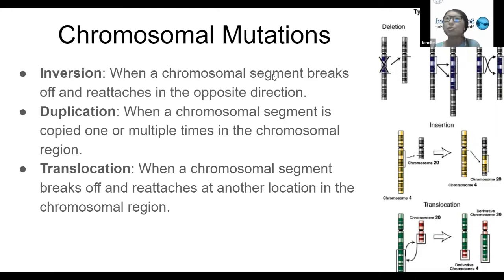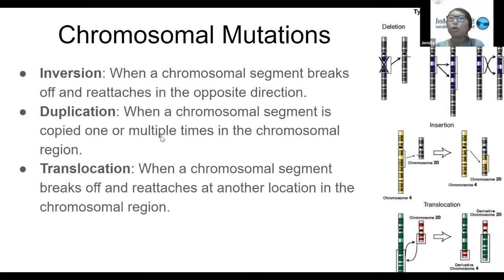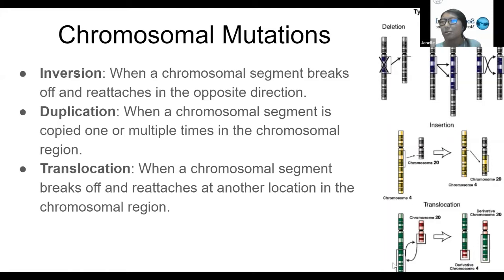There are also inversions, when a chromosomal segment breaks off and reattaches in the opposite direction — you can see in the diagram that one piece inverts so those two pieces are in the original area. Duplication is when a chromosomal segment is copied one or multiple times; in the diagram it was copied twice. Translocation is when a chromosomal segment breaks off and reattaches at another location — here the bottom portion of the green chromosome translocated to the bottom of the pink one, and vice versa.